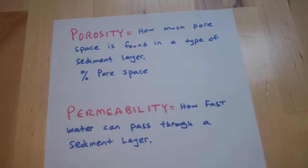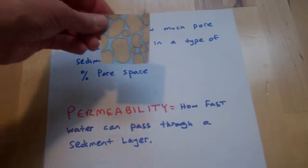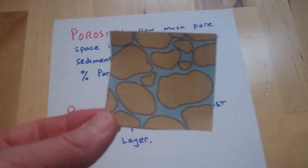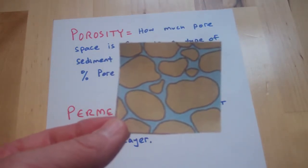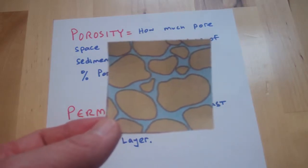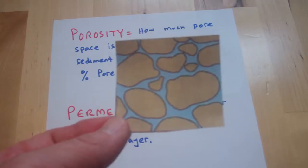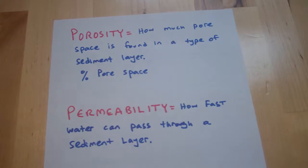Definitions: porosity is how much pore space is found in a type of sediment — expressed as a percent of pore space. Pore space looks like the spaces around sediment particles that can be filled with air or water, shown in blue. So porosity is percent pore space.